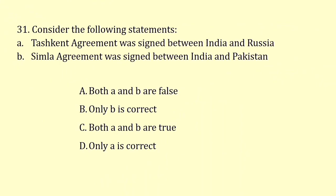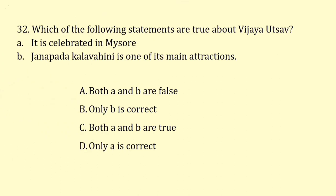Consider the following statements. The Tashkent Agreement was signed between India and Russia — this is wrong; a similar agreement was signed between India and Pakistan — this statement is correct. So the answer is option B. Which statements are true about Vijaya Utsava? It is celebrated in Mysore — wrong. Janapada Kalavahini is one of its main attractions — also wrong. So the correct answer is both A and B are false.